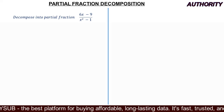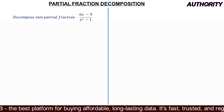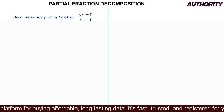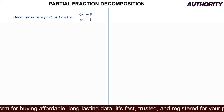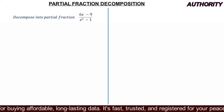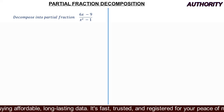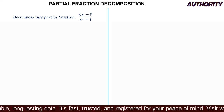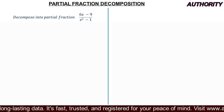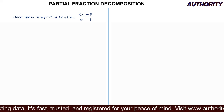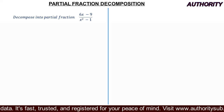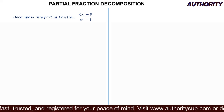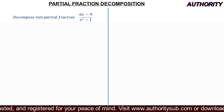Now let's go to the second guideline. The second guideline says: look at your denominator, check if you can factorize it. If you can factorize it, do so. Looking at the denominator here, we have x² - 1.